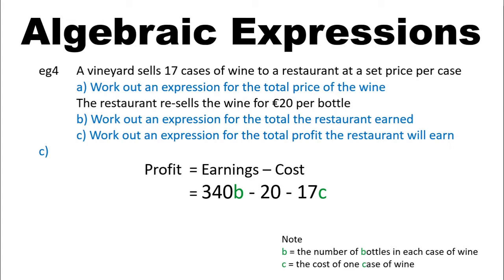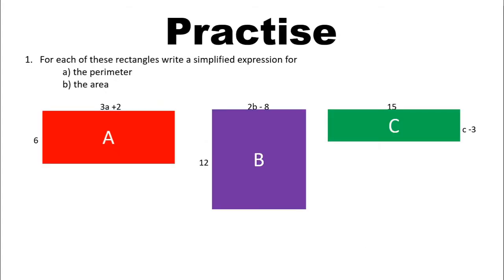If this last example was a bit of a stretch for you, be sure to leave me a comment so I can try and help clarify it. Otherwise, let's get on to the practice exercise. For question one, work out the perimeter and area of each of these rectangles, and make sure you leave your expression in simplified form. Remember that the perimeter of a rectangle is adding up all of the outer sides, and the area is length times width. Go ahead and hit pause, copy the diagrams, and work out your answers.